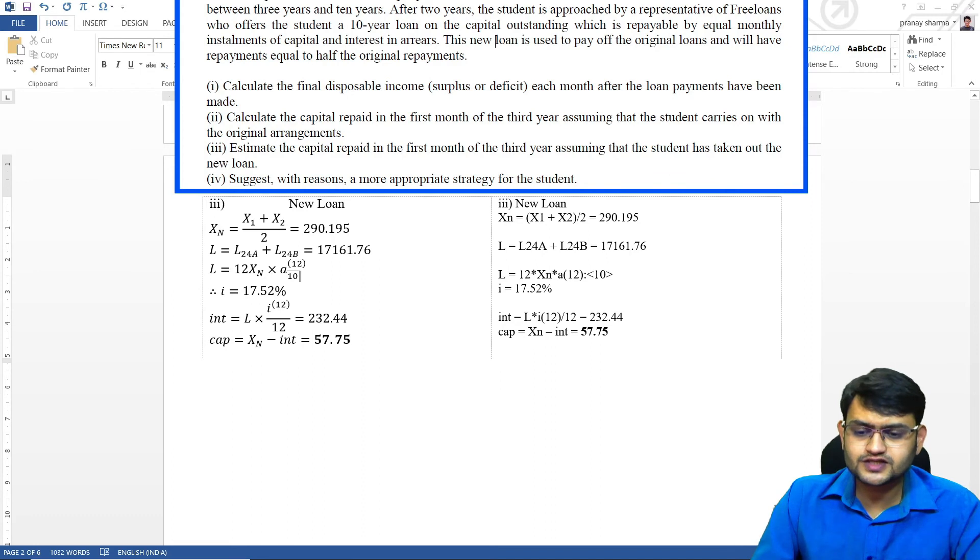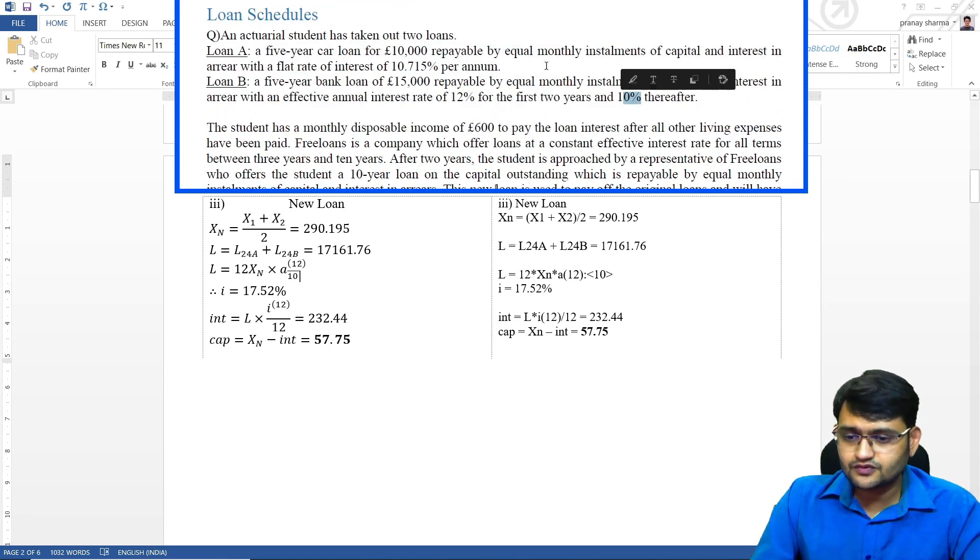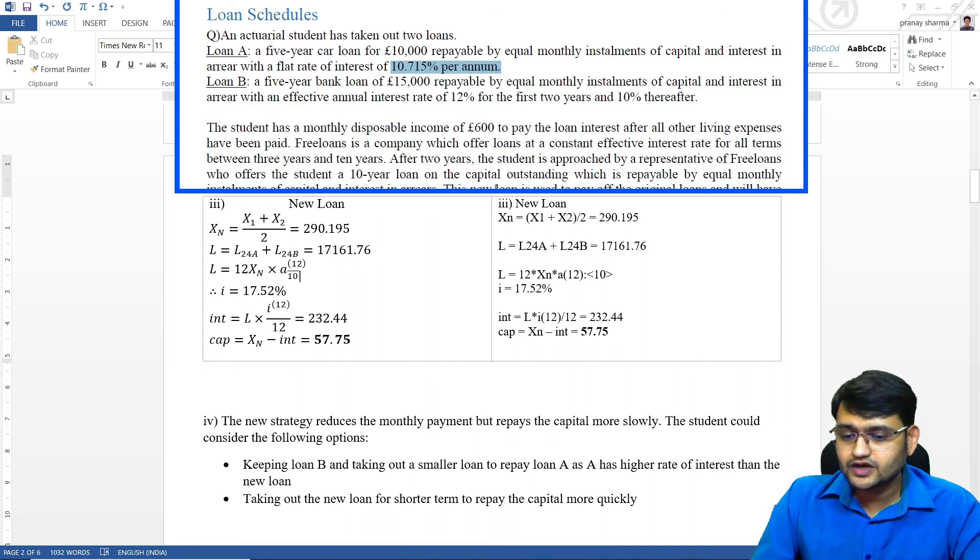So fourth part says suggest with reason a more appropriate strategy for the student. Now specifically we have to make sure that we had a surplus amount of 600 that we can use to pay off loan as soon as possible. And secondly, the interest rate: one of the loans had interest rate of 20 percent, the other had 10 percent. So clearly we can pay off the 20 percent loan and leave off the 10 percent loan, because that is giving us less interest rate. So accordingly you will write your conclusion.